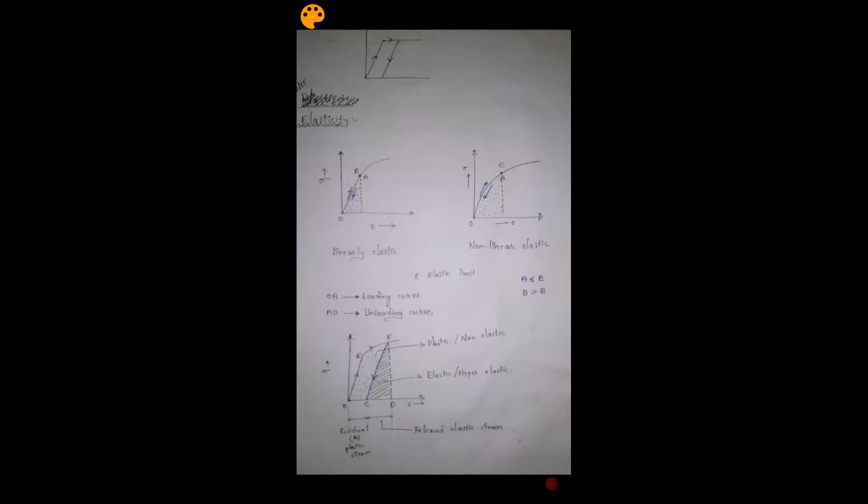Regarding elasticity: the curve is loaded from O to E and then taken to B. From there the stress is reduced and comes back to C, so there is a residual or plastic strain. The energy lost is called plastic or non-elastic energy, whereas the energy regained is called elastic or hyper-elastic energy. This released strain is called release strain.